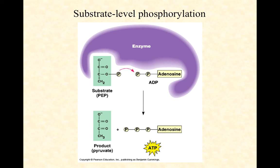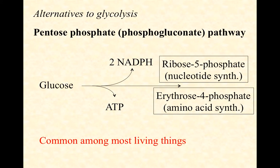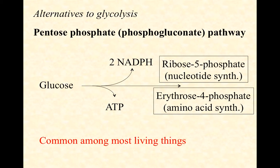Before moving on to the Krebs cycle, we need to look at two alternatives to glycolysis. The pentose phosphate pathway is common among many living things including bacteria. It's also called the phosphogluconate pathway — you don't need to know that for this class but may see it on a standardized test. We'll just call it the pentose phosphate pathway, and it's common in microorganisms that also have a glycolysis pathway, becoming an alternative depending on conditions.